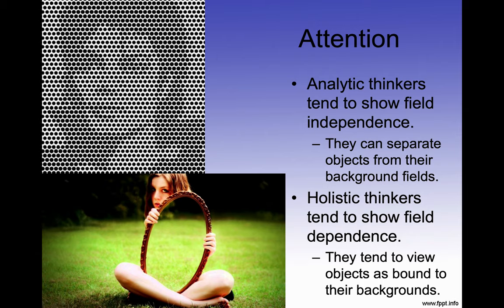Analytic thinkers tend to show field independence — they can separate objects from their background fields. Holistic thinkers tend to show field dependence — they view objects as bound to their background. So looking at a picture, the holistic thinker sees the whole image — like seeing Michael Jackson in a mosaic — while the analytic thinker sees all the individual pixels. This is one of the reasons why at the mall, when there's a picture with a hidden sailboat, it takes people a while — because we see things by their component parts. If we were holistic thinkers, we'd see it right away.